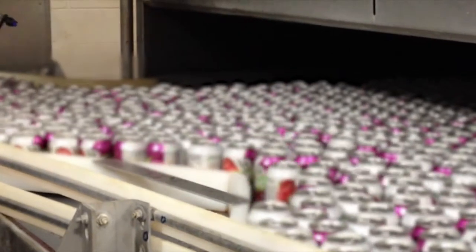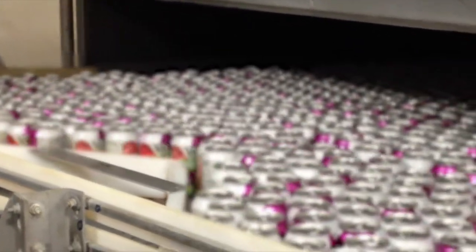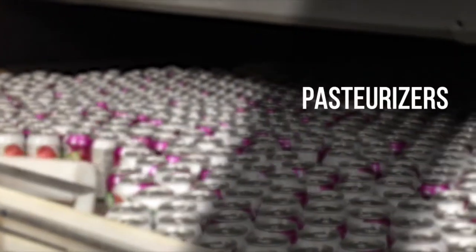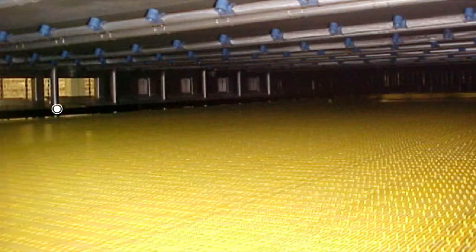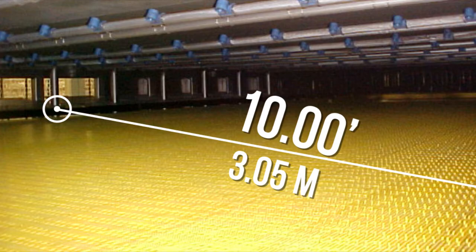Shaft alignment is most critical for wide tunnel applications, such as pasteurizers, warmers, or coolers. These chains usually span over 10 feet in width.